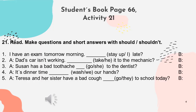Now let's go to the student's book, page 66, activity 21. It says: read and make questions and short answers with 'should' or 'shouldn't.' We have five sentences. The first one says: 'I have an exam tomorrow morning,' and then we need to complete the sentence using 'should' or 'shouldn't.'